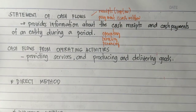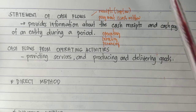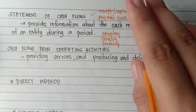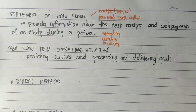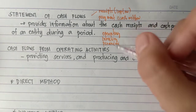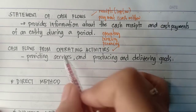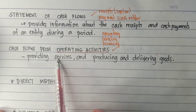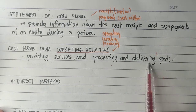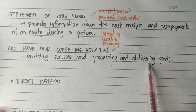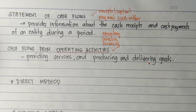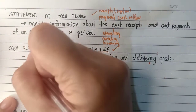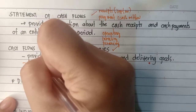This statement of cash flows shows the net increase or decrease in cash during the period and the cash balance at the end of the period. First, we have cash flows from operating activities, which provides services and produces and delivers goods. These cash flows from operating activities are generally the cash effects of transactions and other events that enter into the determination of profit or loss.